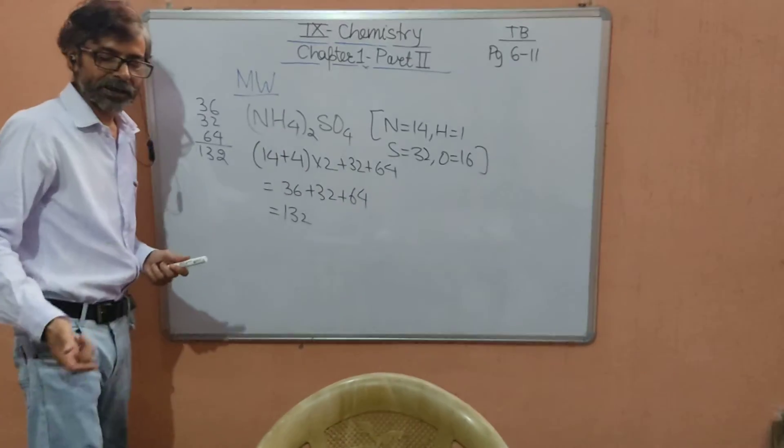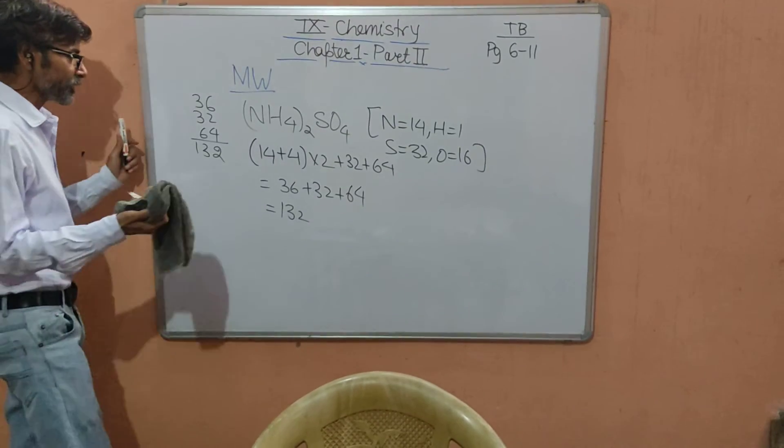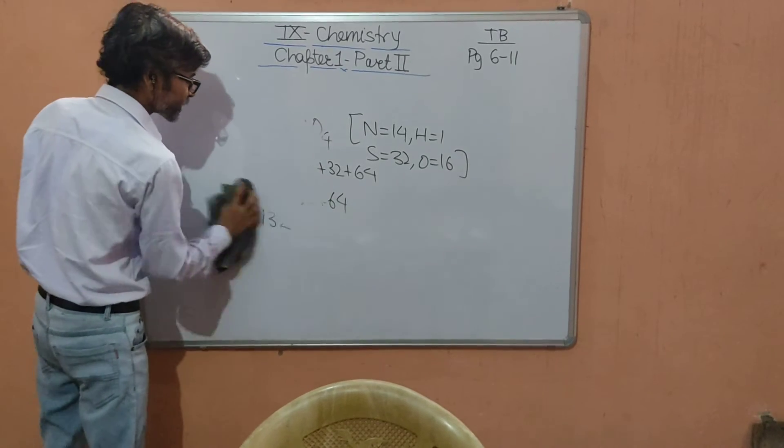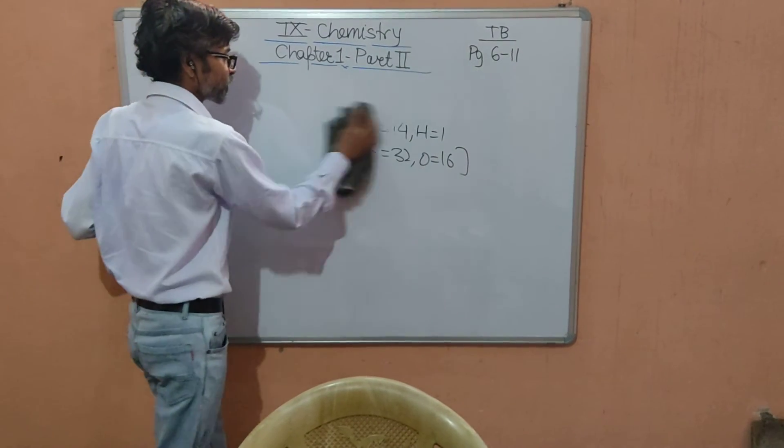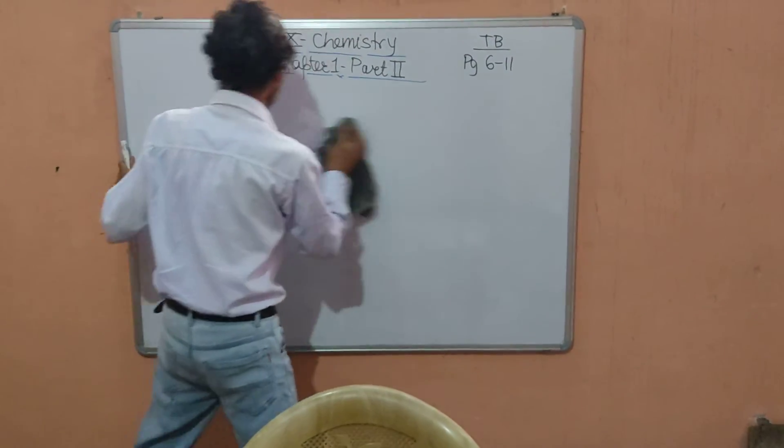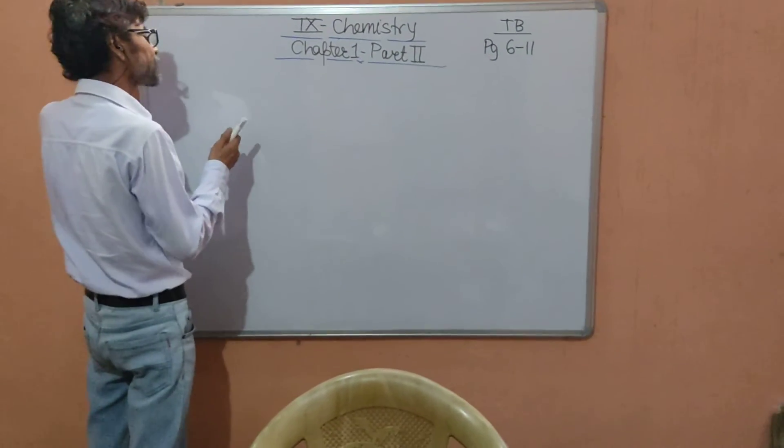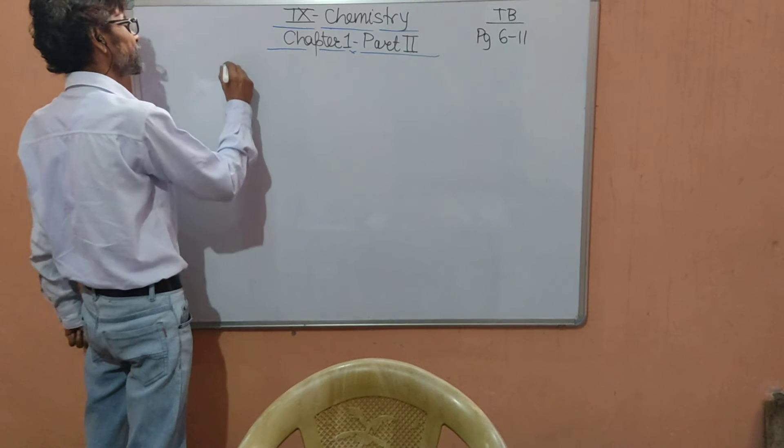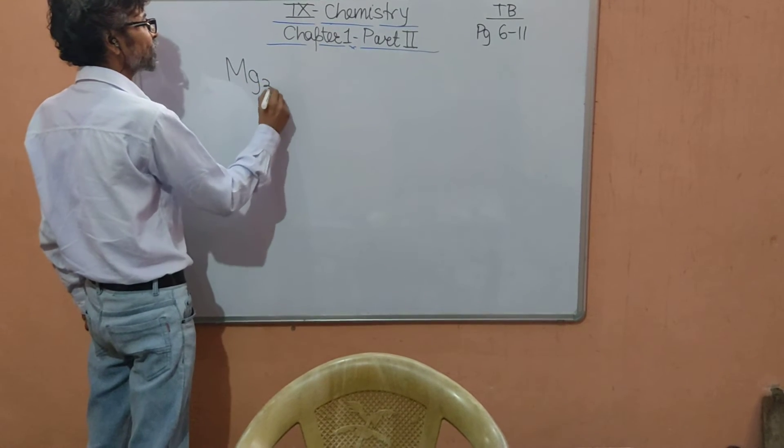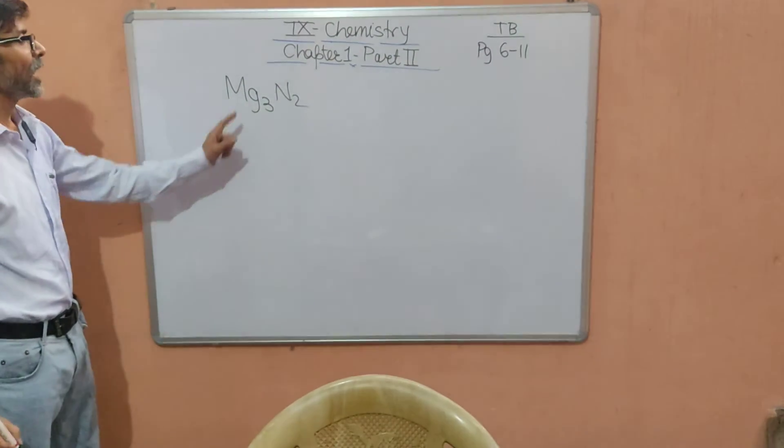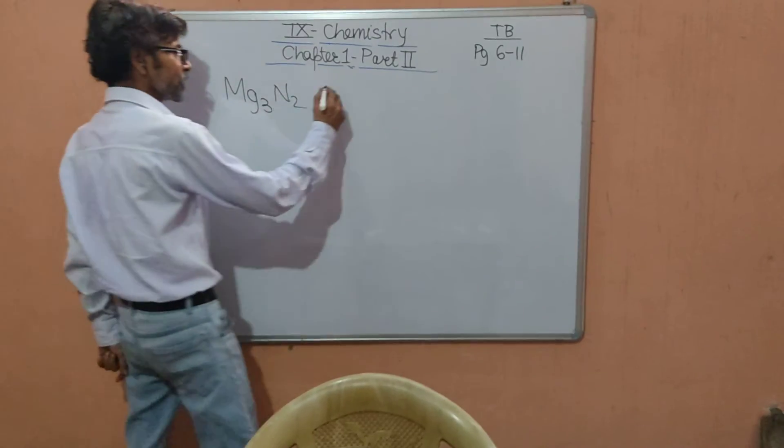Then, after calculation of molecular weight, the percentage composition. The last topic here is percentage composition of a compound. Suppose you have a compound, let us take magnesium nitride, Mg3N2, and you have to find the percentage of magnesium and nitrogen here.